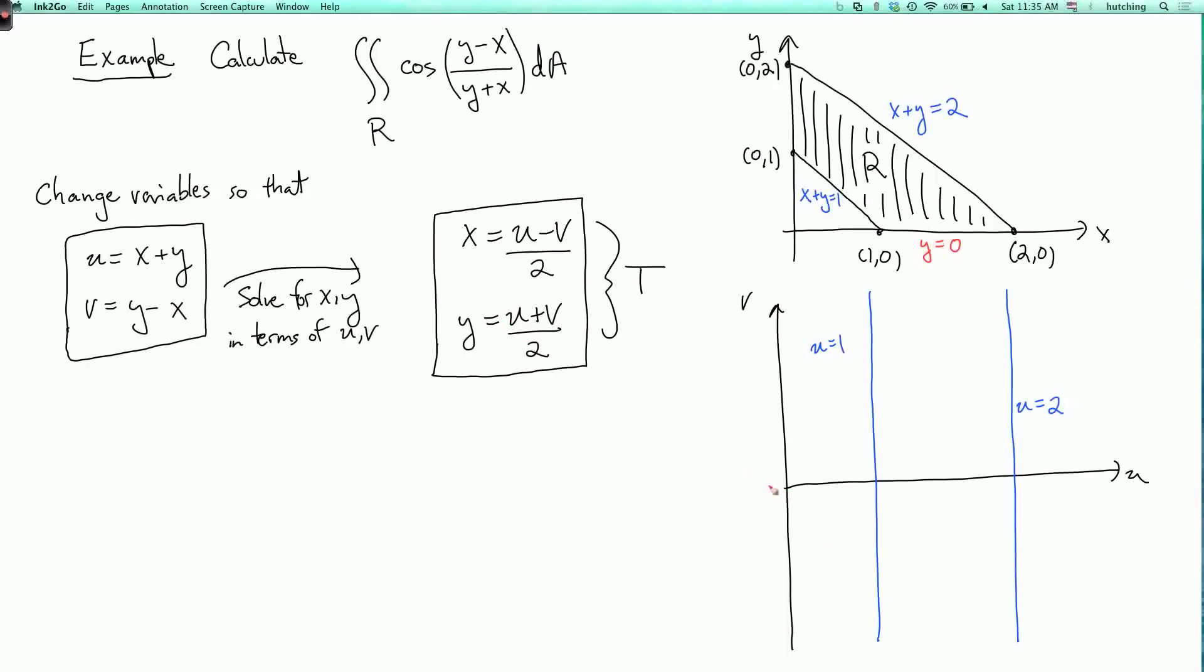So y equals 0 when u plus v equals 0, and u plus v equals 0 is v equals minus u. So that's this line here. We can start over here. So this is the line u plus v equals 0.